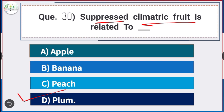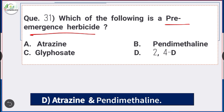Question number 31: Which of the following is a pre-emergent herbicide? Answer is option D — atrazine and pendimethalin. Atrazine and pendimethalin are examples of pre-emergent herbicides.